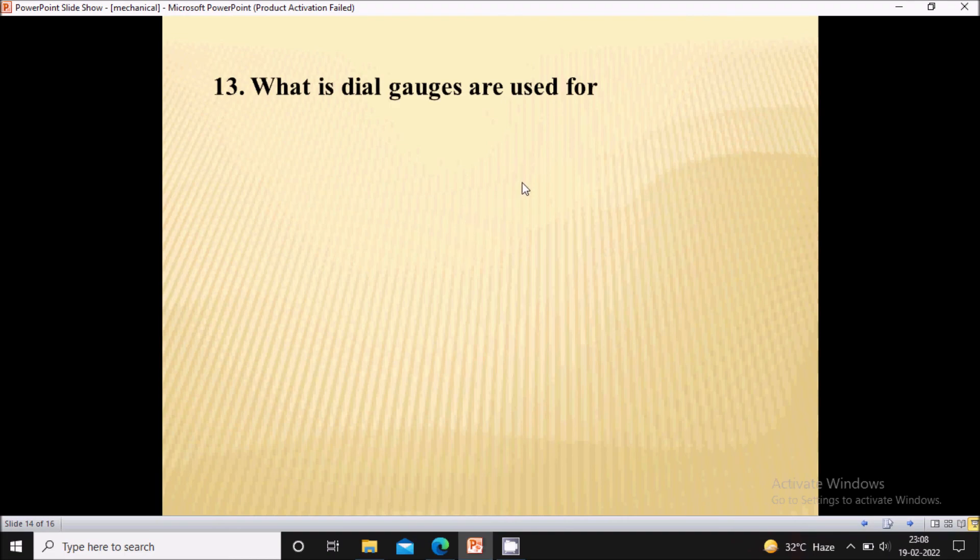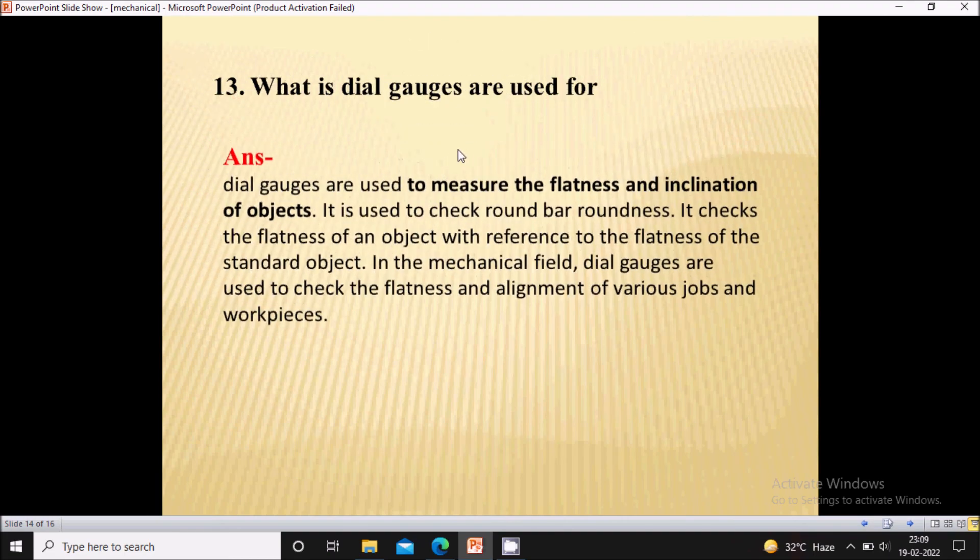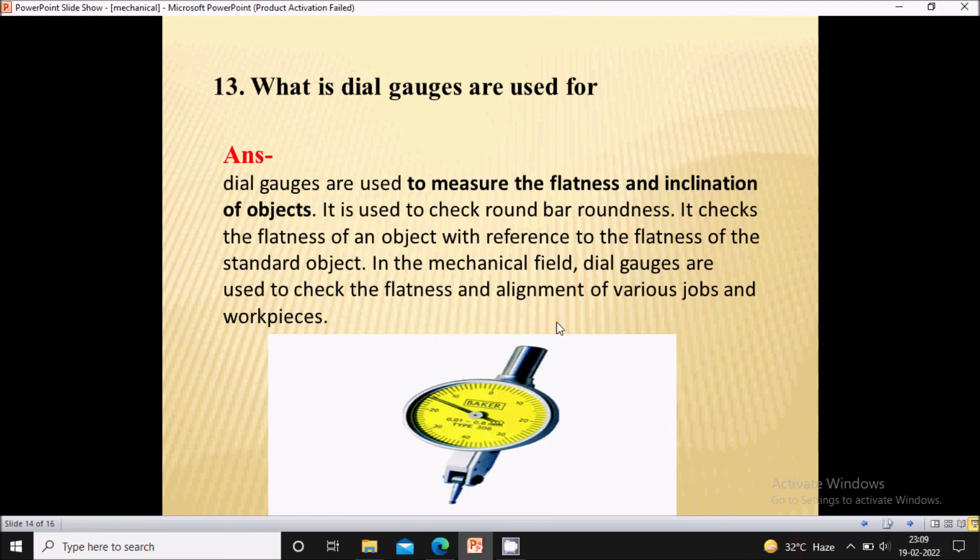Thirteenth question, what is dial gauges are used for? So we see the application of dial gauges in tool room. Now dial gauges are used to measure the flatness and inclination of object. It is used to check round bar roundness. It checks the flatness of an object with reference to flatness of a standard object.